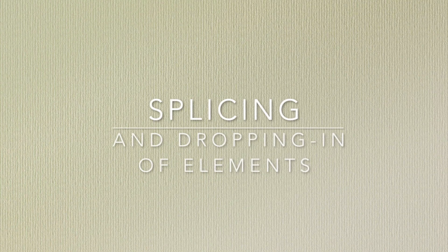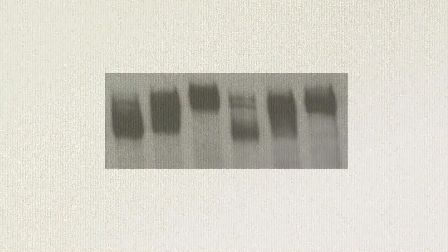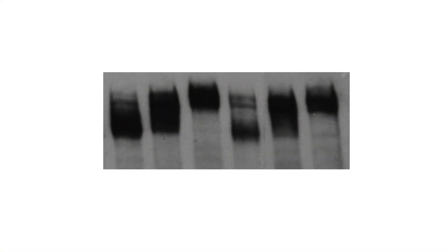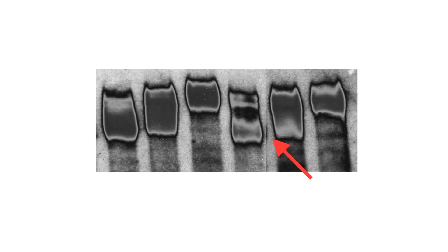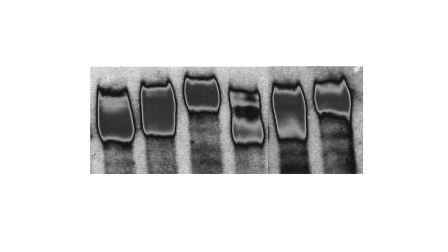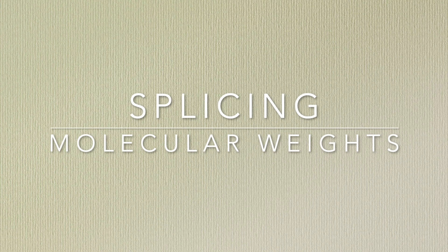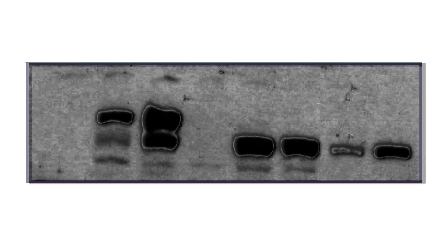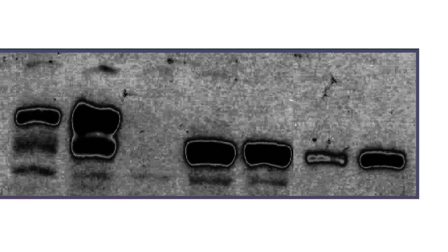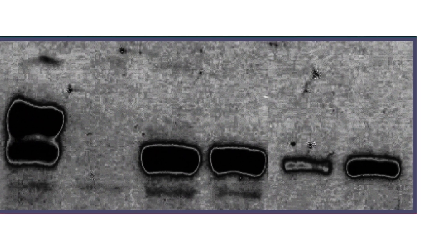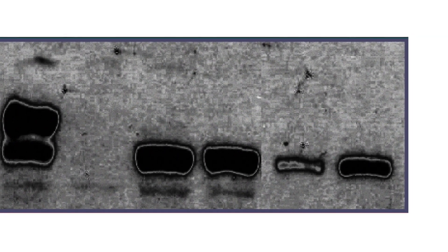Looking more closely at individual blot panels, you may detect vertical or horizontal hard straight lines where the background appears interrupted. These are generally digital cuts where an image section was either inserted or removed. Splice marks are often more easily detected in solarized images. If you do detect any potential splice marks, you should ask for raw data to trace exactly where the cuts were made and why. It is acceptable to juxtapose lanes that weren't adjacent in the gel, as long as the cut is declared and clearly marked.